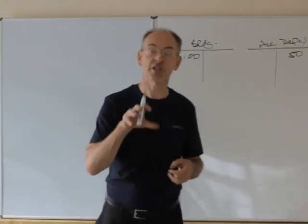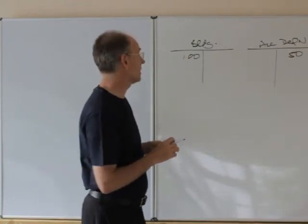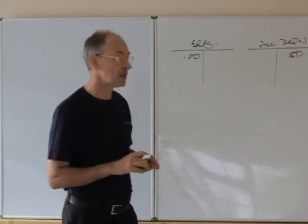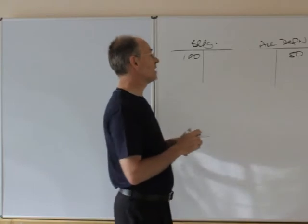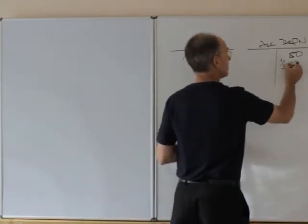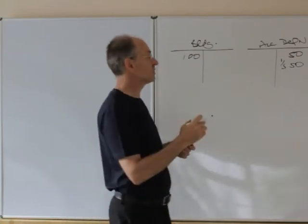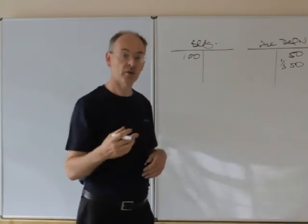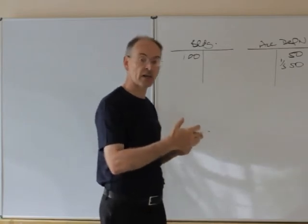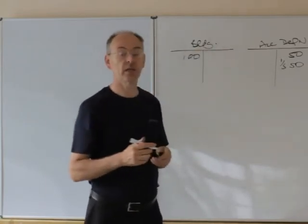So the depreciation charge for the final year would be 50. In the final year, the income statement would receive an extra 50 for depreciation expense, rather than if we'd gone according to plan, it would have been 25 that year and then 25 the following year.